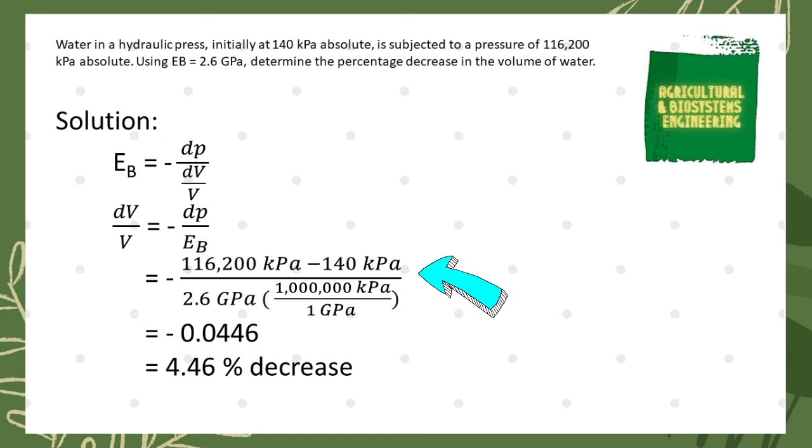The unit GPa must be converted to kPa using the conversion factor of 1 GPa equals 1,000,000 kPa. After that, we simply solve it and we now have a final answer of negative 0.0446.